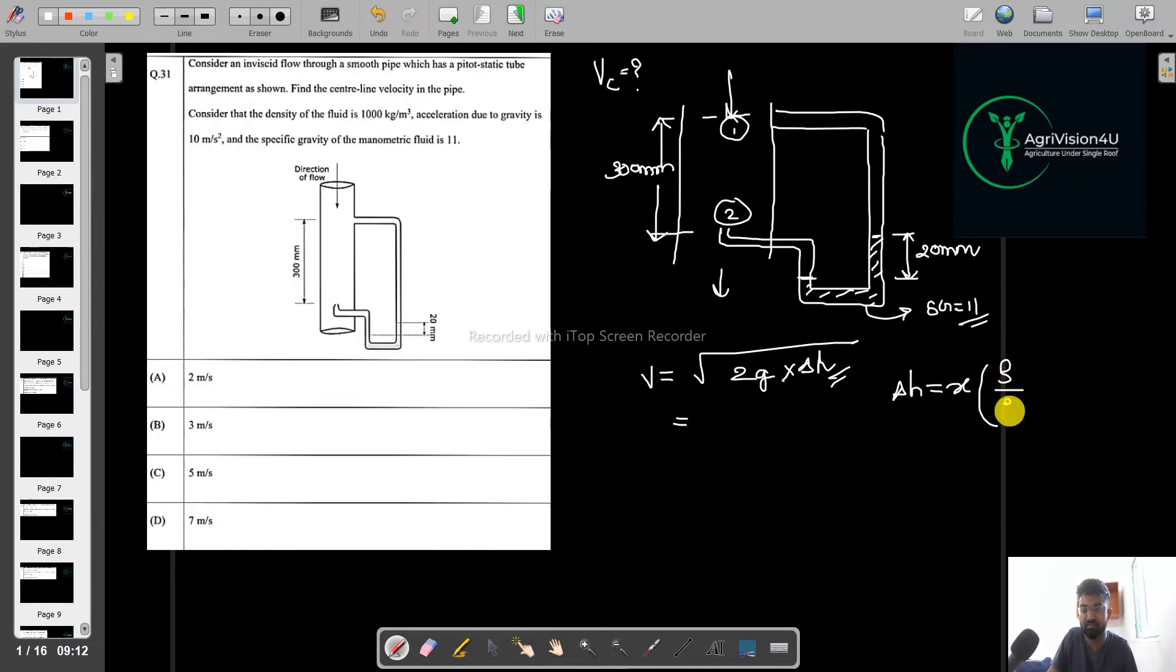So this is the distance x, this x is given, then this is manometric and this is the standard. So our manometric density is 11 and here we will use 1 minus of 1. So 0.02 into 10 you will get 0.2. So that is the delta H.